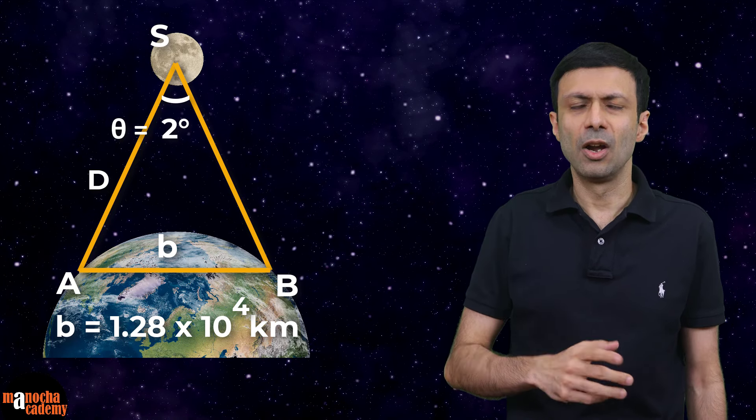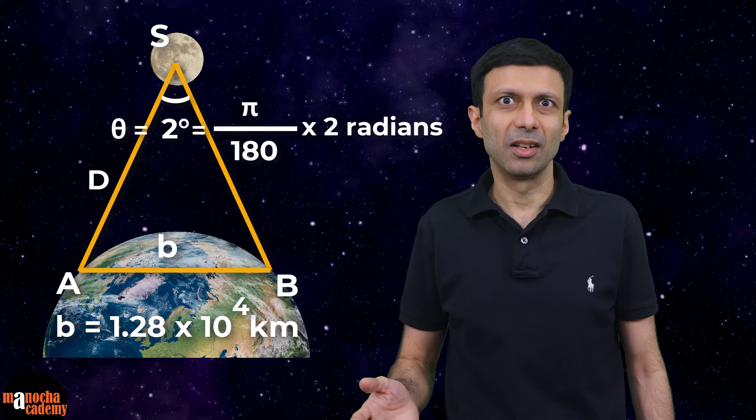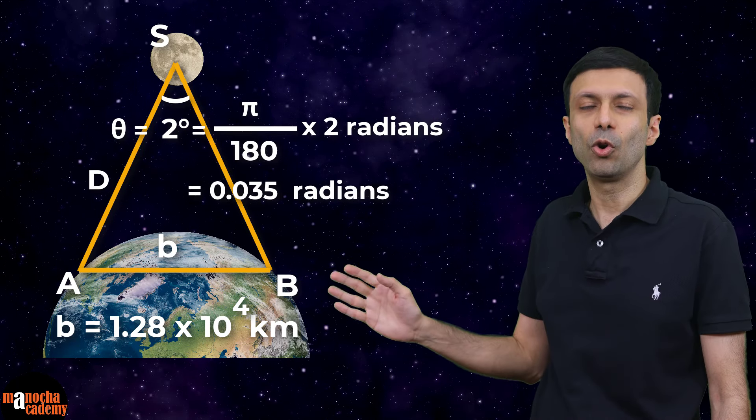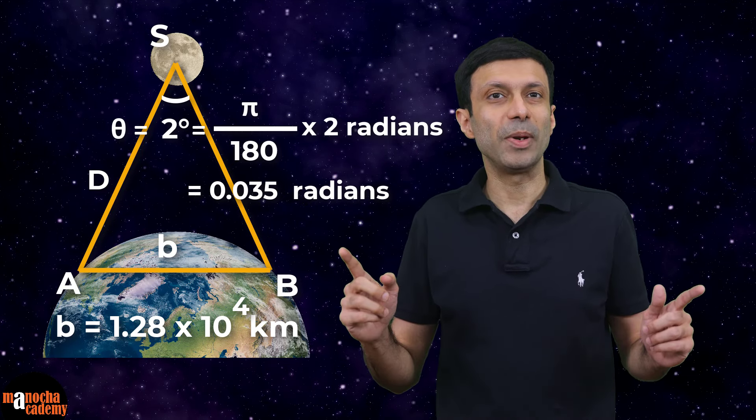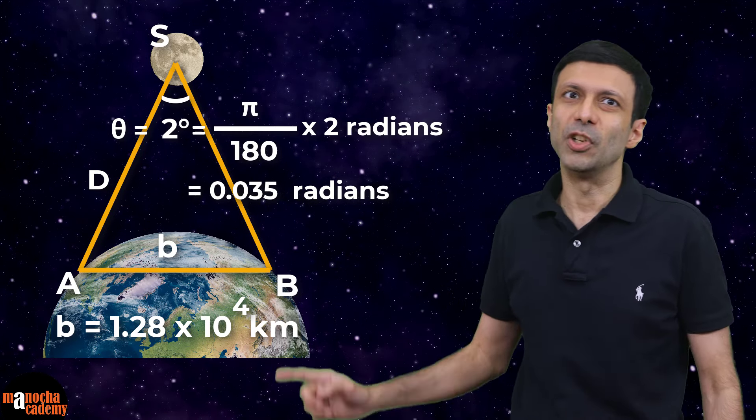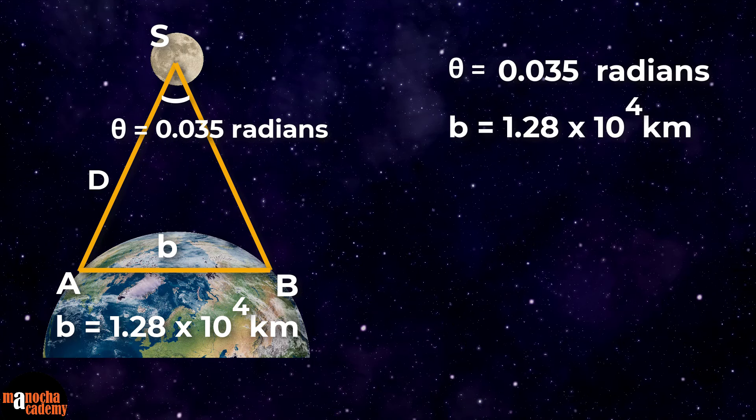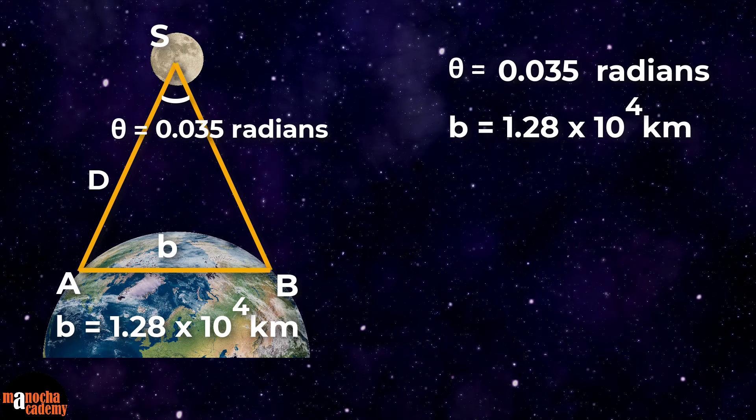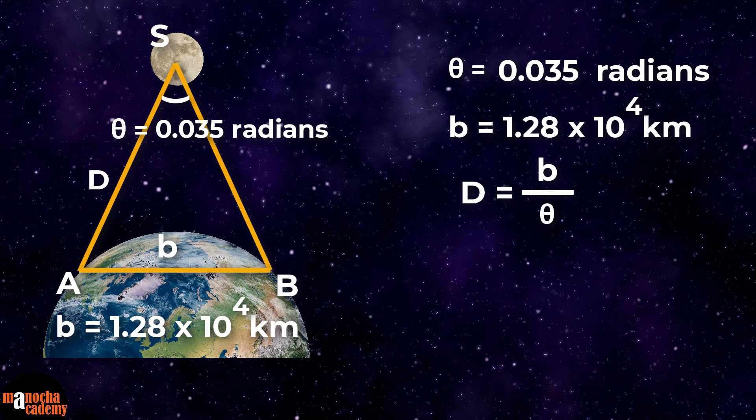So here we can put theta is 2 degrees that you need to convert into radians. 2 degrees is pi by 180 times 2 radians, which is approximately 0.035 radians. The basis is going to be the diameter of the earth, which is B is 1.28 times 10 to the power 4 kilometers.